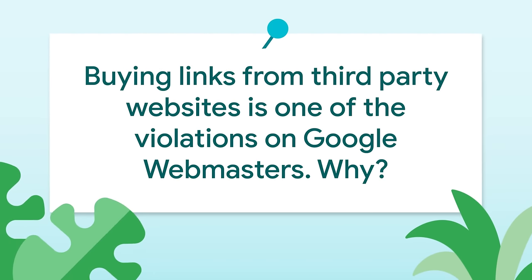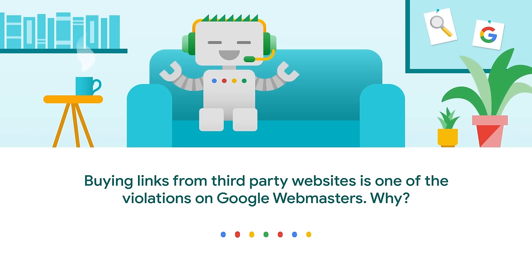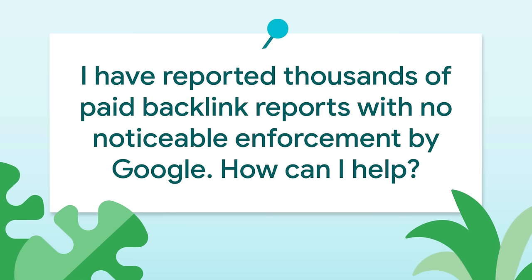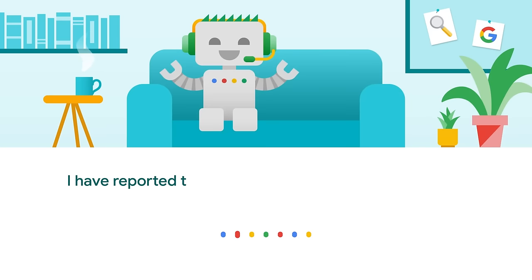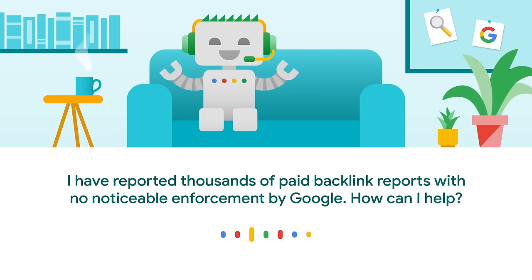Rakesh asks: buying links from third-party websites is one of the violations on Google Webmasters — on what basis is that? Nothing has changed with regards to paid links in a really long time. I'd recommend reading our spam policies, especially the section on link spam. If you have additional questions, post in the help community where you can discuss this with other experts. Anonymous is asking: I have reported thousands of paid backlinks with no noticeable enforcement by Google. How can I help Google act on these reports? Thank you for reporting those backlinks, but keep in mind that we use those reports to improve our algorithms in general and we don't take individual actions on each one of those reports. You can read more about this on our blog.